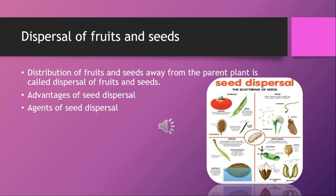Distribution of fruits and seeds away from the parent plant is called dispersal of fruits and seeds. It has several advantages: first, it ensures the wide distribution of seeds over a large area; second, it ensures the survival of a large number of seedlings under favorable conditions.